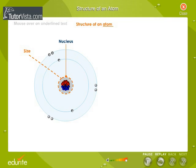The size of the nucleus is extremely small compared to the size of the atom. The nucleus consists of two types of particles known as protons and neutrons.